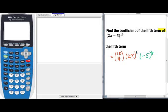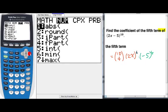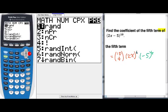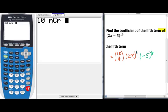For the calculator, for the combination, we will put the 10 first. Then I go to math, we go to probability, then we go to 3, put enter. Then we put 4, we multiply.